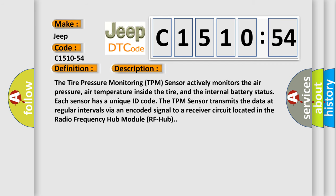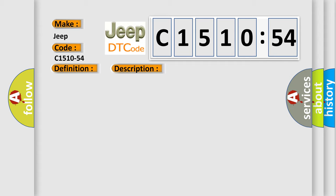And now this is a short description of this DTC code. The tire pressure monitoring TPM sensor actively monitors the air pressure, air temperature inside the tire, and the internal battery status. Each sensor has a unique ID code. The TPM sensor transmits the data at regular intervals via an encoded signal to a receiver circuit located in the radio frequency hub module RF hub.